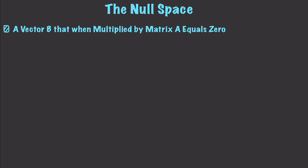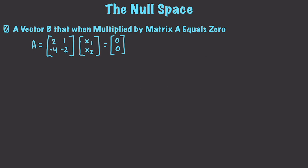I'm going to work you through three examples. Let's say we have a matrix A which is 2, 1, negative 4, and negative 2, and I want to find the vectors that are in the null space of this matrix A. What I'm going to do is create a vector with x1 and x2 inside of it, and I know that my result should be a vector of zeros. I want to solve for the values of x1 and x2 that are going to make this true. So we have 2, 1, negative 4, negative 2 — the zeros are not going to change anything, so I'm just going to leave it like that.